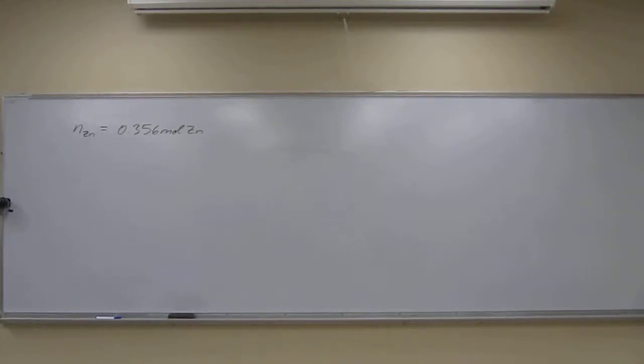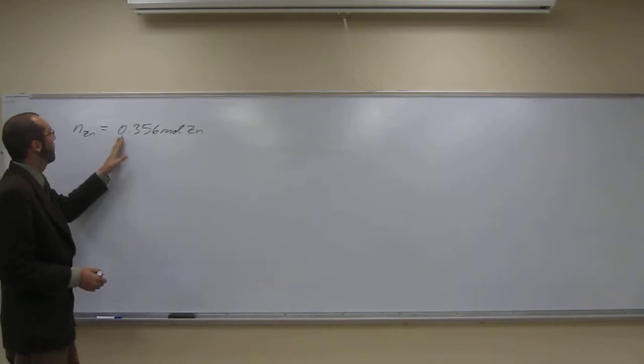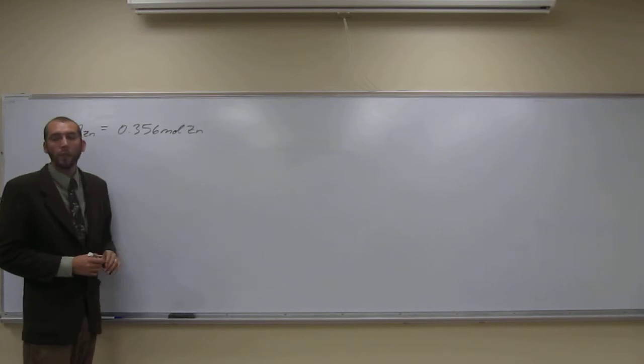Okay, so let's try this next one. This next one says zinc is a shiny metal that's used in plating iron to prevent corrosion. So how many grams of zinc are in 0.356 moles of zinc? So I've written up here 0.356 moles of zinc.